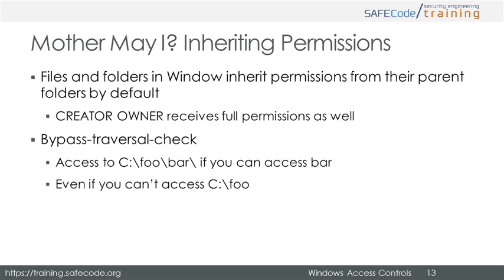So far we've only had to worry about permissions for a single level in the directory hierarchy, but keep in mind a directory's ancestors can influence its permissions as well. In Windows, subdirectories and files inherit permissions from their parent folder by default. Although permissions are inherited, access checks do not traverse the entire directory hierarchy — Windows can bypass the parent permissions through bypass traverse checking. For example, you can access the folder bar residing in directory foo if the ACL for bar gives you access, even if the ACL for foo does not grant you access.